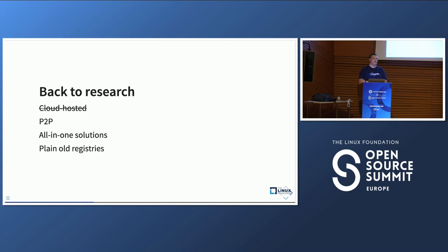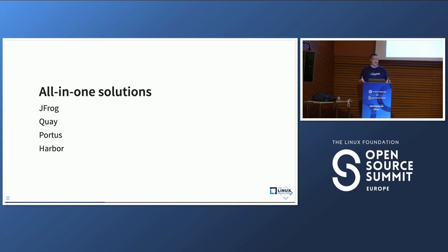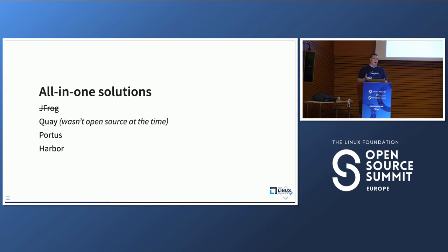Going back to research, cloud-hosted registries were no longer an option, and peer-to-peer registries have a very specific use case, so they weren't an option either. We looked at all-in-one solutions from the CNCF landscape. We quickly crossed off JFrog — it's awesome, but the integration we needed would have taken a lot of work. Quay wasn't open source at the time. Portus was basically unmaintained. So the only thing remaining from the CNCF landscape was Harbor.